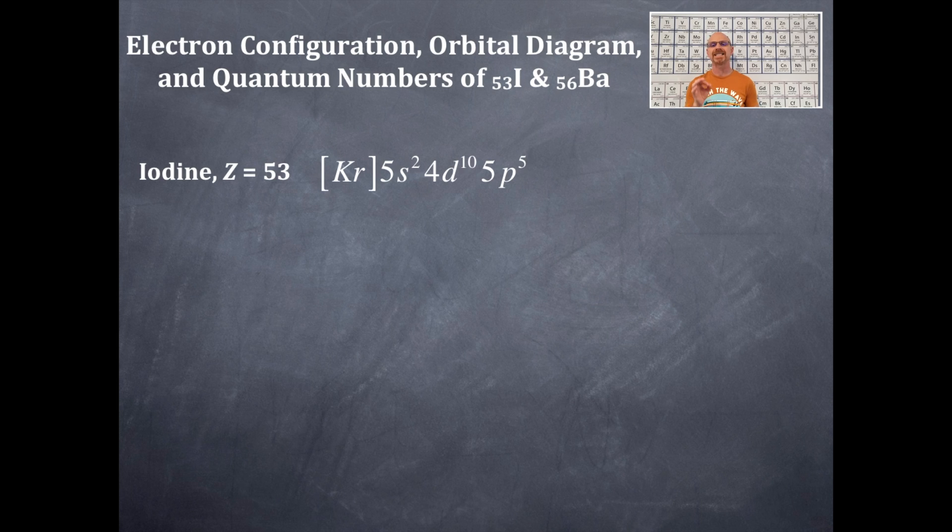That's 5s2, 4d10, 5p5. Remember the Ds are one less than the period in which they are found in. That's why it's a 4d and not a 5d.